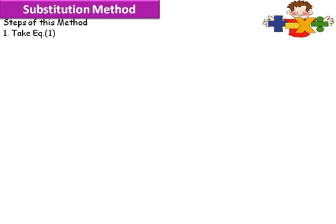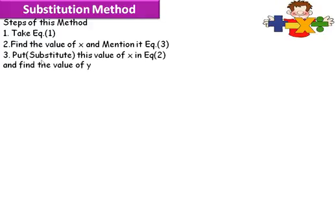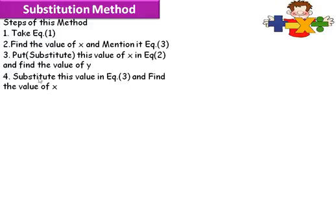What you have to do? First, take equation 1 and find the value of x from equation 1, and mention it as equation 3. Now put or substitute this value of x in equation 2 and find the value of y. Then substitute this value of y in equation 3 and find the value of x. Only four steps you have to follow and you will get the value of x and y.